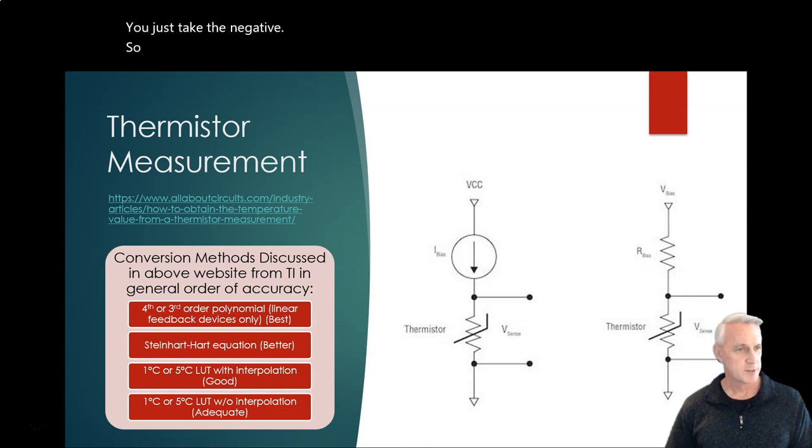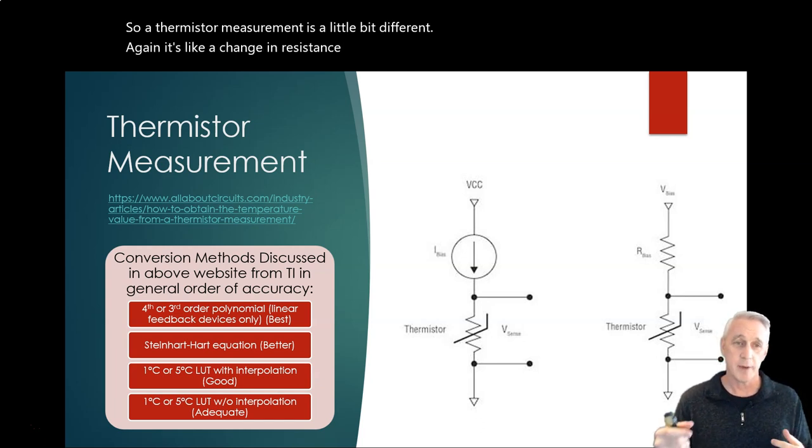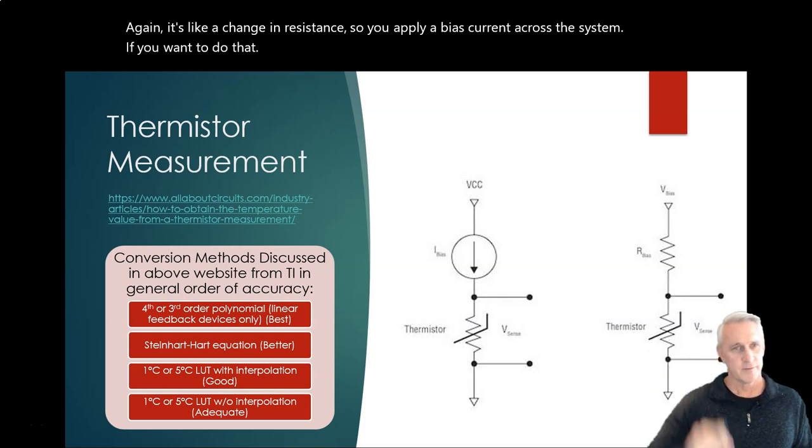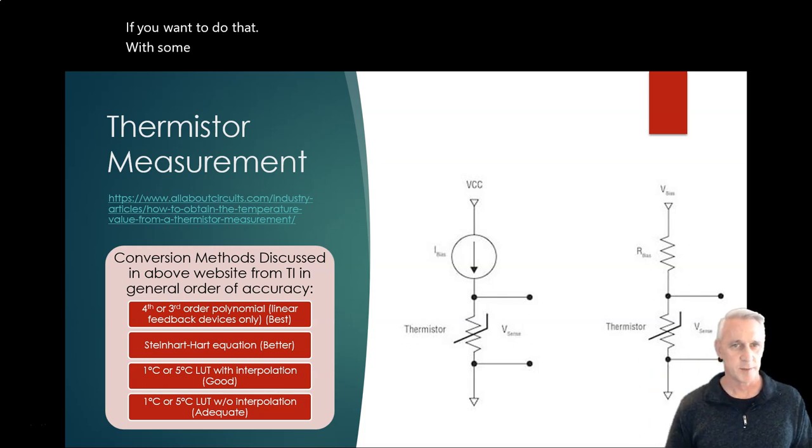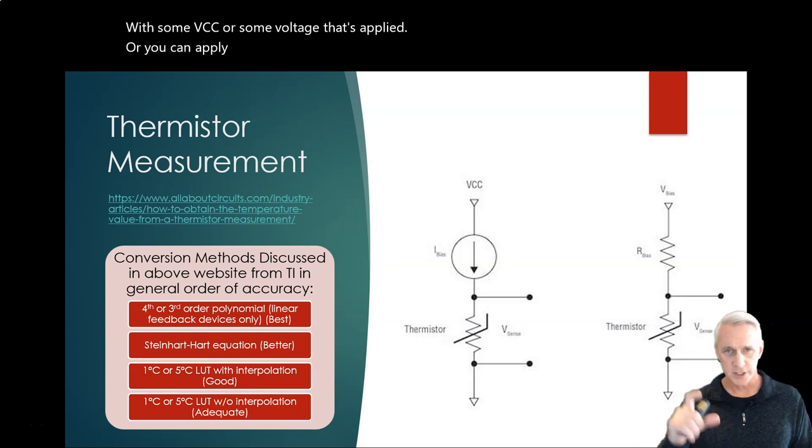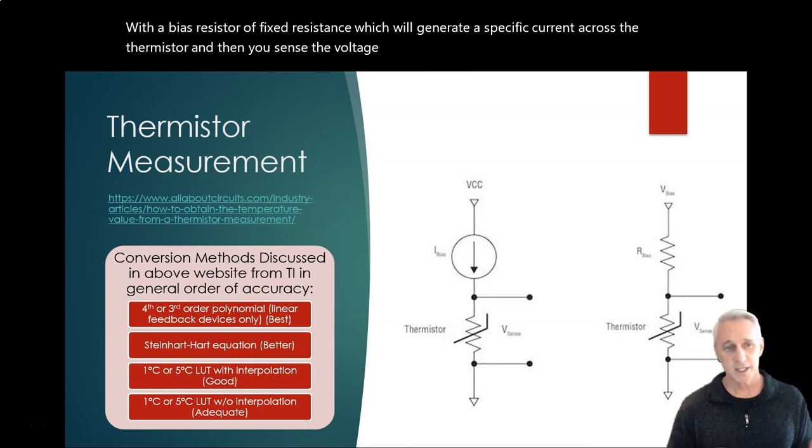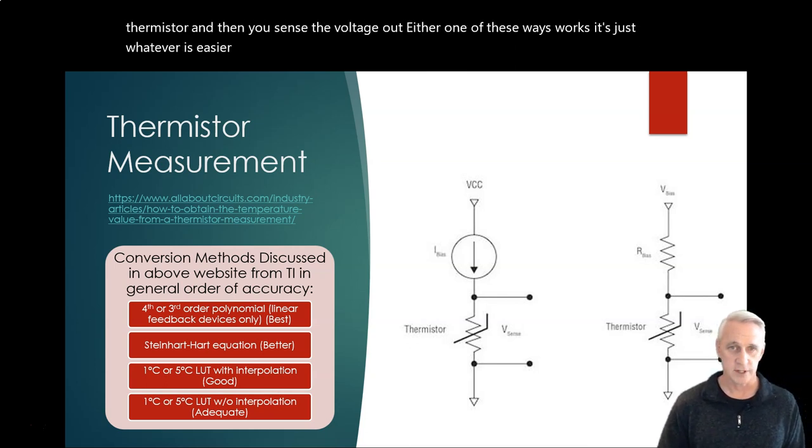Thermistor measurement is a little bit different. It's like a change in resistance, so you apply a bias current across the system with some VCC or some voltage that's applied. Or you can apply a bias voltage with a bias resistor, a fixed resistance, which will generate a specific current across the thermistor, and then you sense the voltage out. Either one of these ways works - it's just whatever is easier for the application.